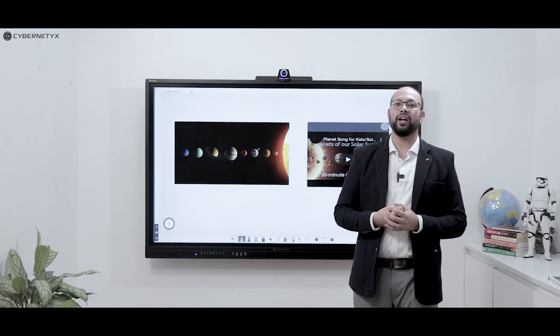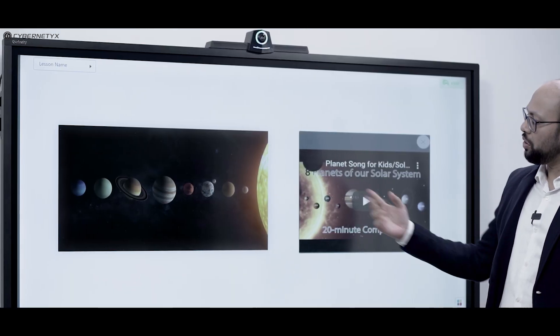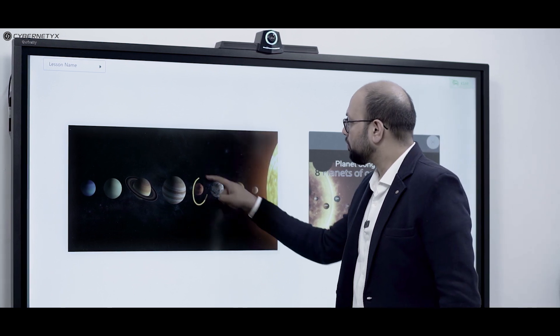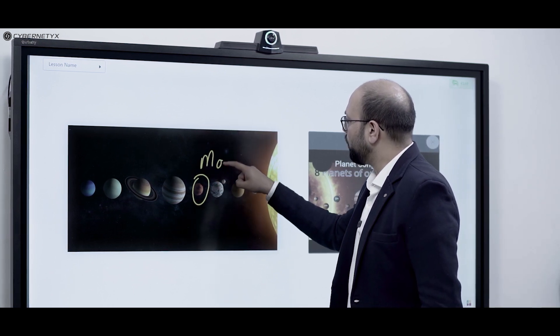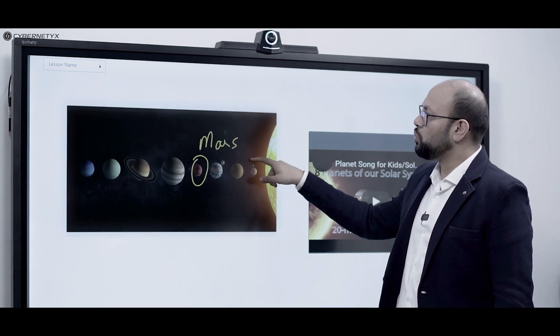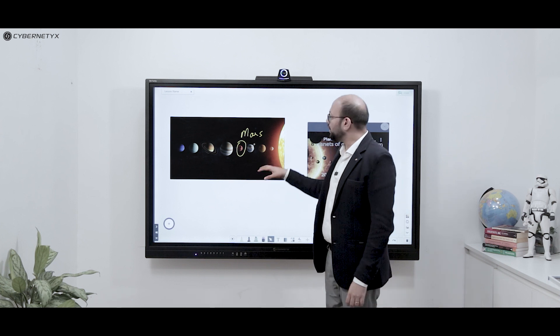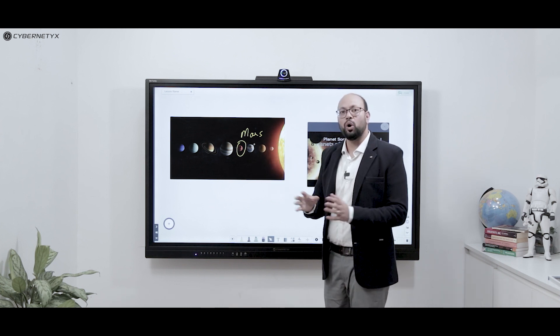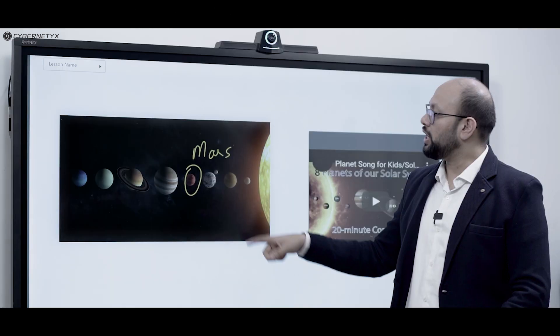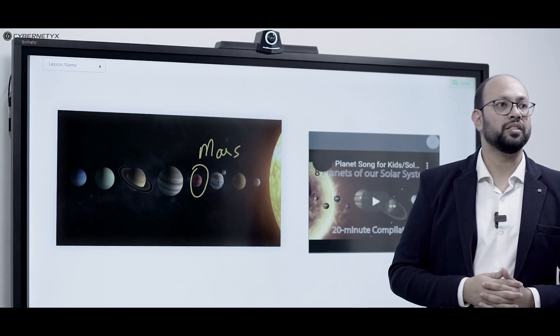Similarly, you can add multimedia content like images and videos using the import option. Once you've added your content, you can start teaching. You can start annotating on the images. What you notice here is that as I move these images, the entire content moves together. The system has intelligently auto-grouped all your content so that when you're moving or zooming, you don't lose the content or the content doesn't move in a different direction.